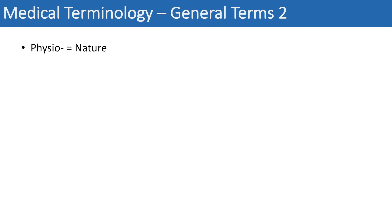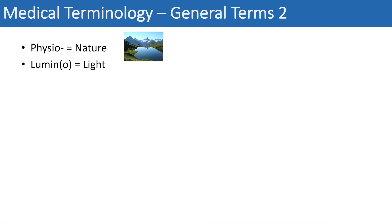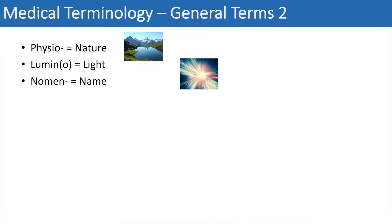We have even more general terms. The prefix physio means nature — you can think of a physiotherapist. The next one is lumen or lumino, which means light — you can think of the word lumen or illuminate. The next prefix is nomen, which means name, and you can think of the word nomenclature.